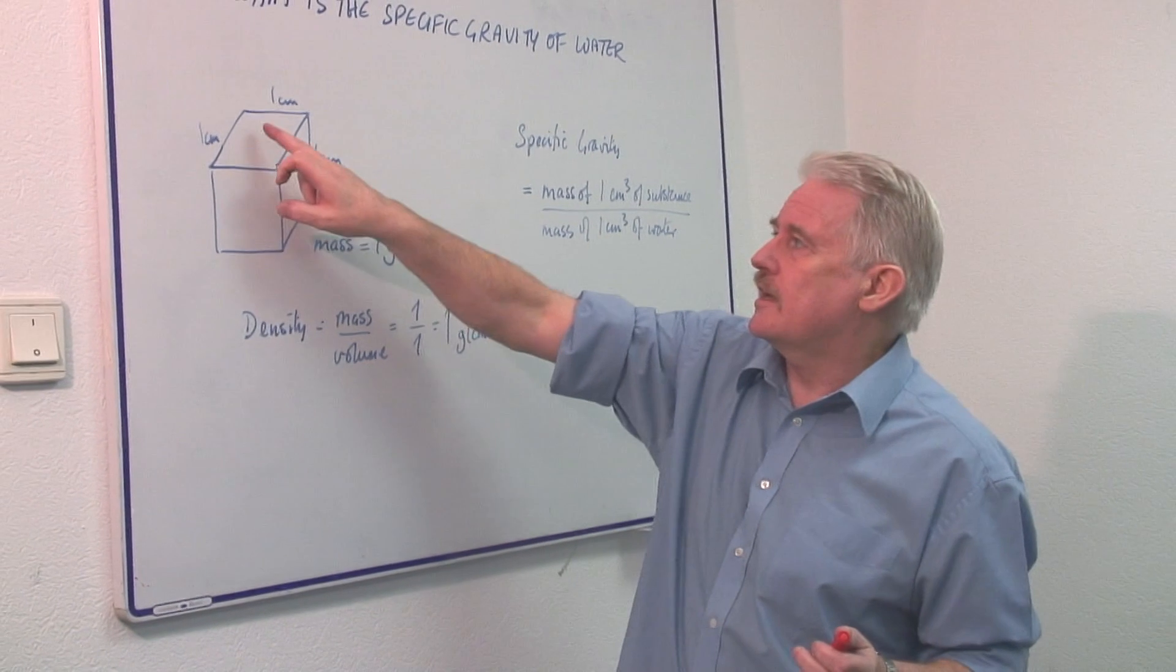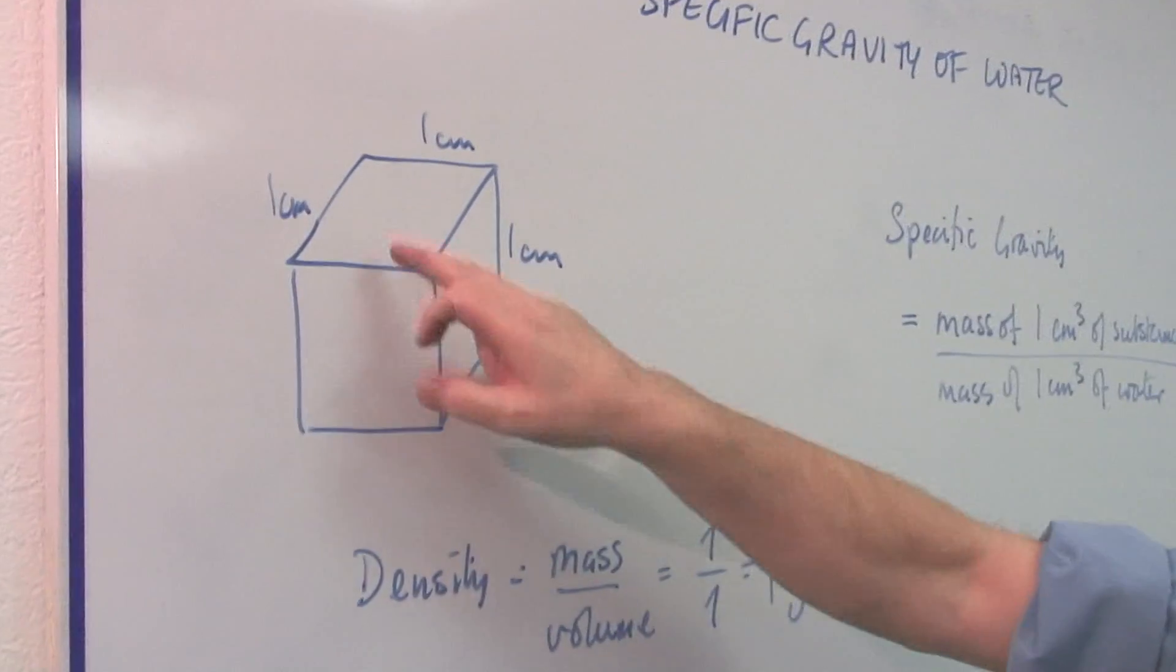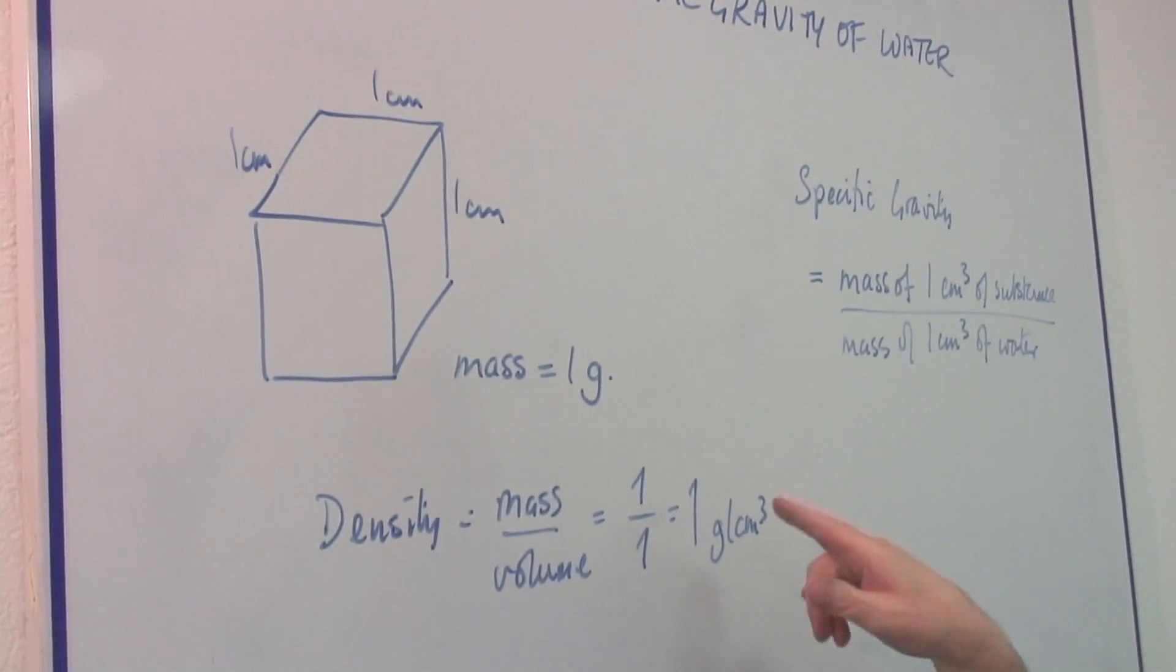First of all, let's take a one centimeter cube. One centimeter by one centimeter by one centimeter. So its volume is one centimeter cubed.